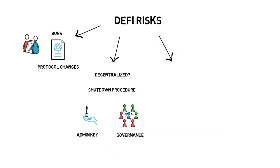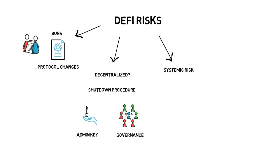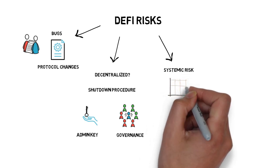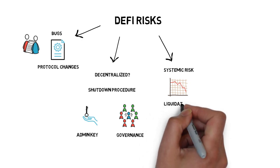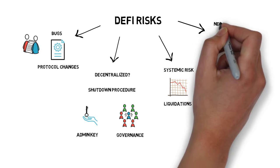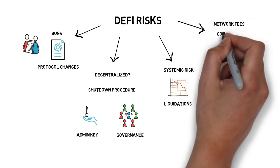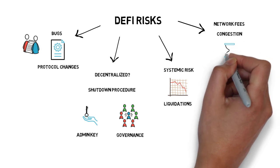On top of that, we have to always account for the more systemic risk that can be caused by, for example, asset prices sharply losing their value, which may result in a cascade of liquidations across multiple DeFi protocols. Network fees and congestion can also be a problem, especially if we want to avoid liquidations and we are trying to supply more collateral on time.